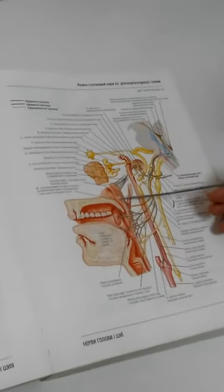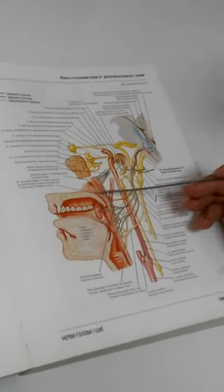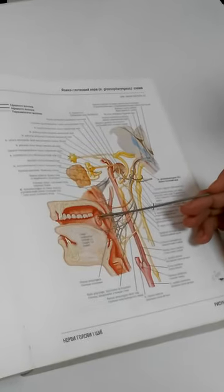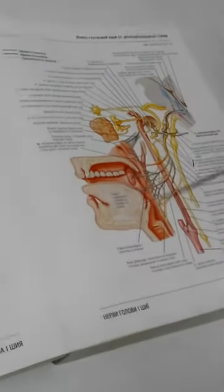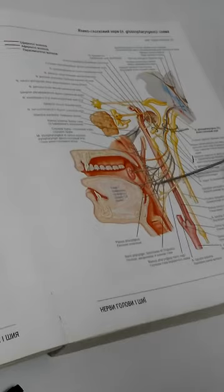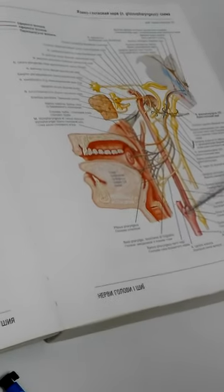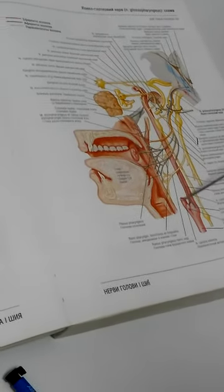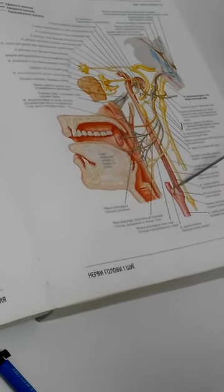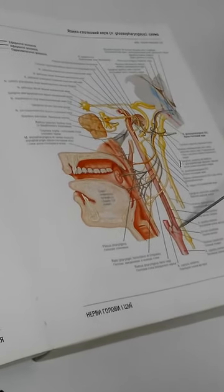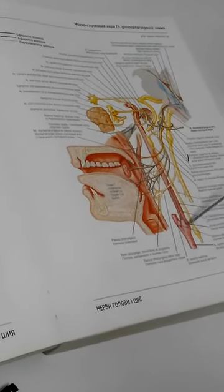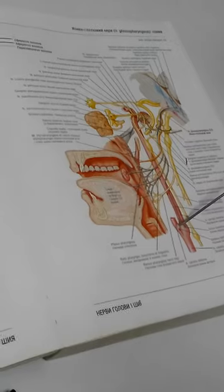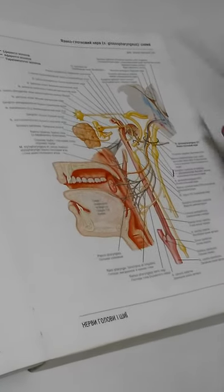Additionally, it innervates the soft palate — ramus palatinus — the tonsils — ramus tonsillaris — the posterior third of the tongue — rami linguales — the pharynx — rami pharyngei — and glomus caroticus — ramus glomus caroticus. Glomus caroticus is located at the bifurcation of the carotid artery, where the common carotid artery bifurcates into the external and internal carotid. Between them you see glomus caroticus. That was nervus glossopharyngeus.